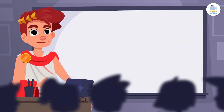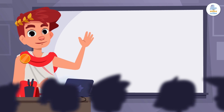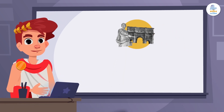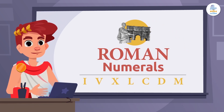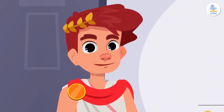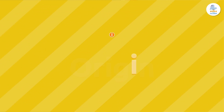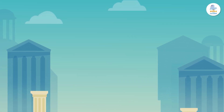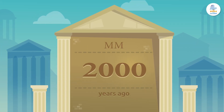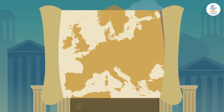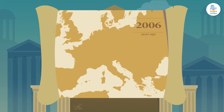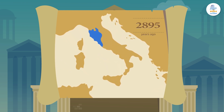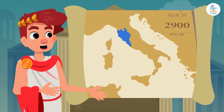Hello friends! Today we're going back in time to ancient Rome to learn about Roman numerals. Are you coming with us? Roman numerals are the numbering system used in the Roman Empire more than 2,000 years ago, but the origin of this system is even older — it comes from the Etruscan civilization, a group of people who lived in Tuscany, Italy, about 2,900 years ago. Incredible, right?